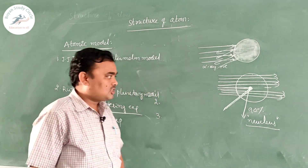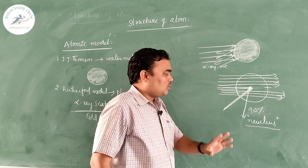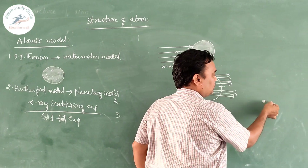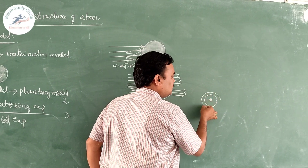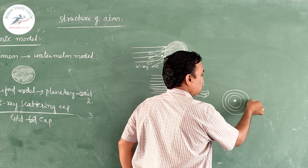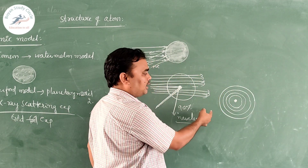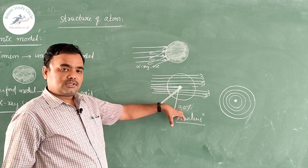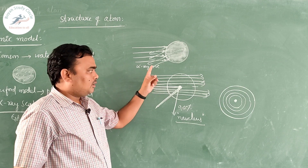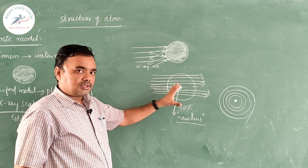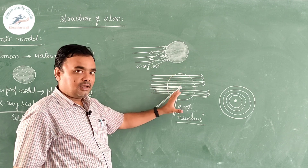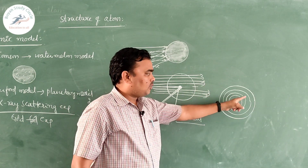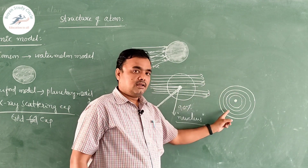Both the teacher and the student got the Nobel Prize for their work. Apart from this, Rutherford said the positive charge is located at the center — the nucleus — and electrons are revolving around the nucleus in circular paths or circular orbits. Just as planets revolve around the sun — that is why this is called the planetary model. According to the experiment: the atom is mostly empty, the positive charge is located at the center called the nucleus, and electrons revolve around the nucleus in circular paths.